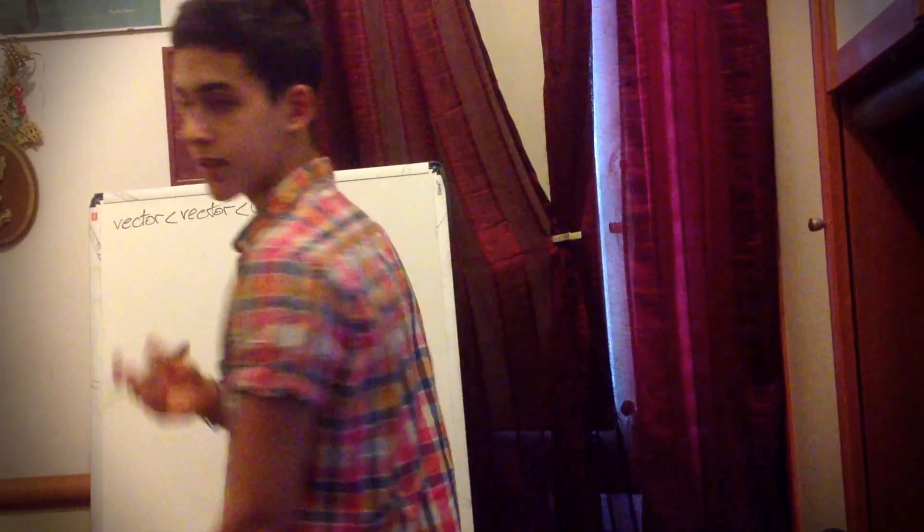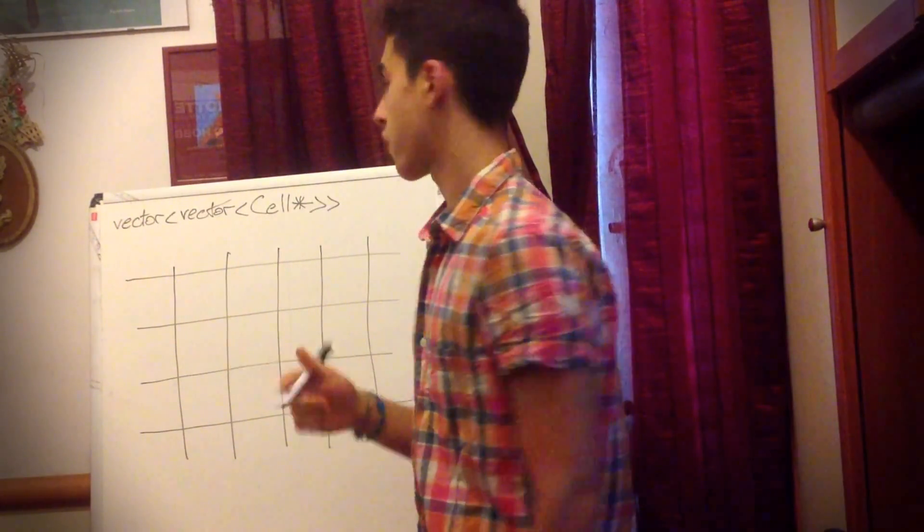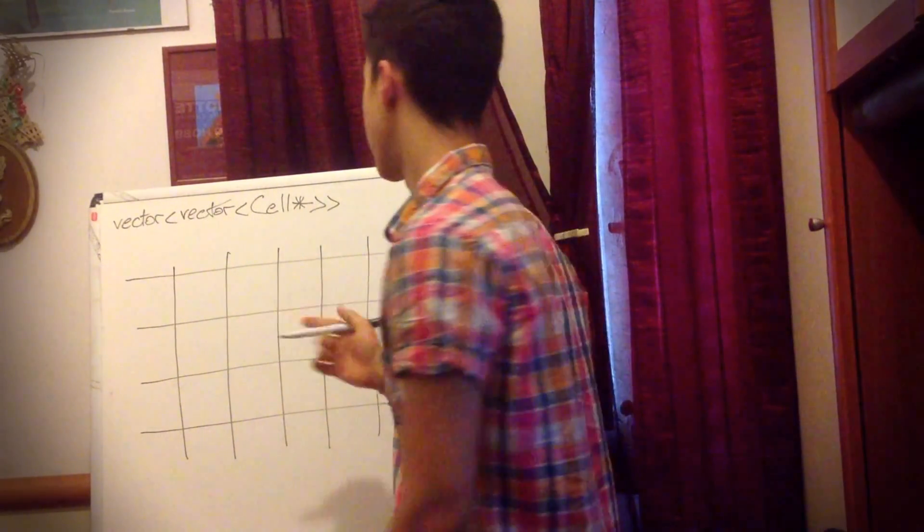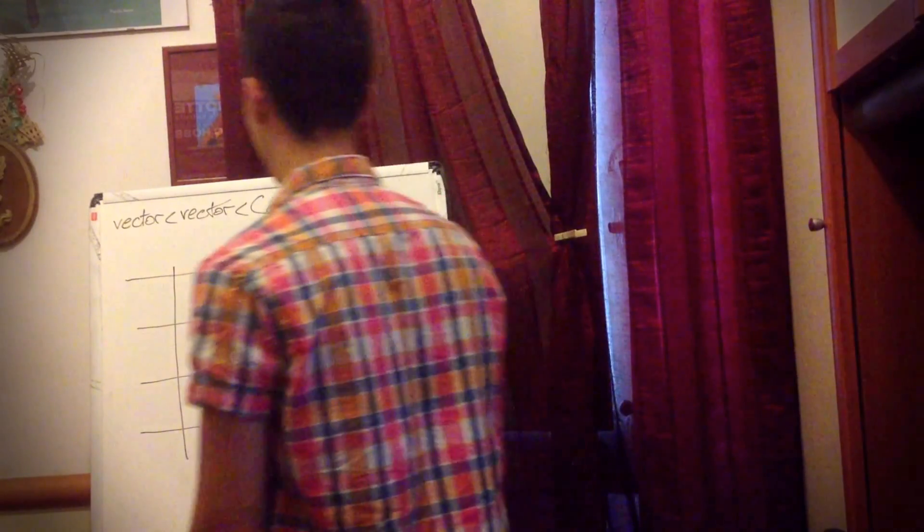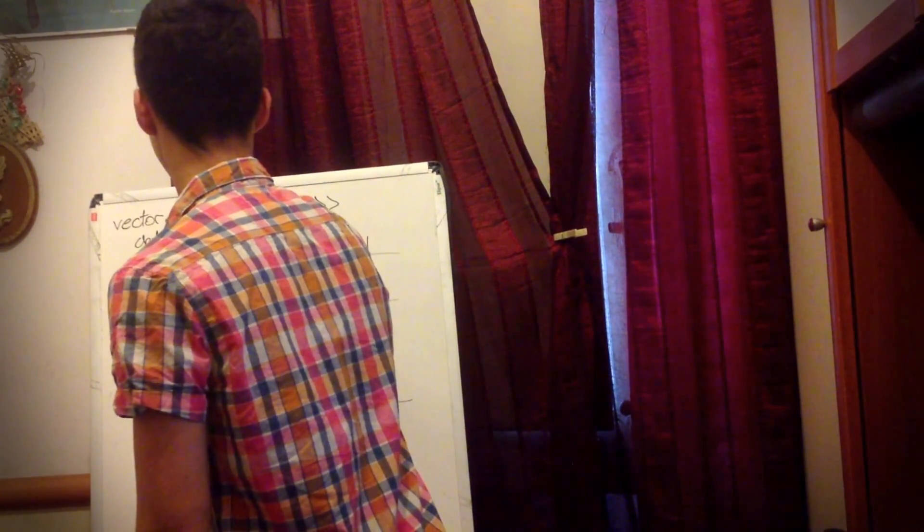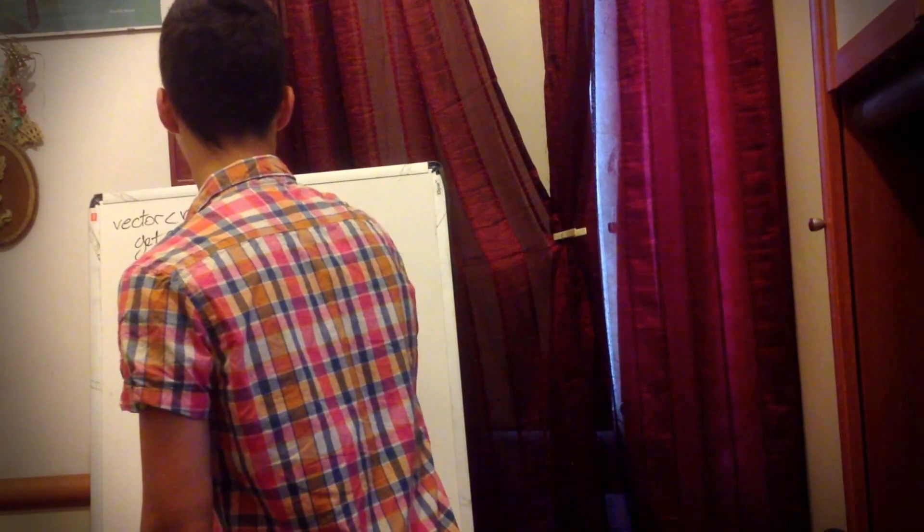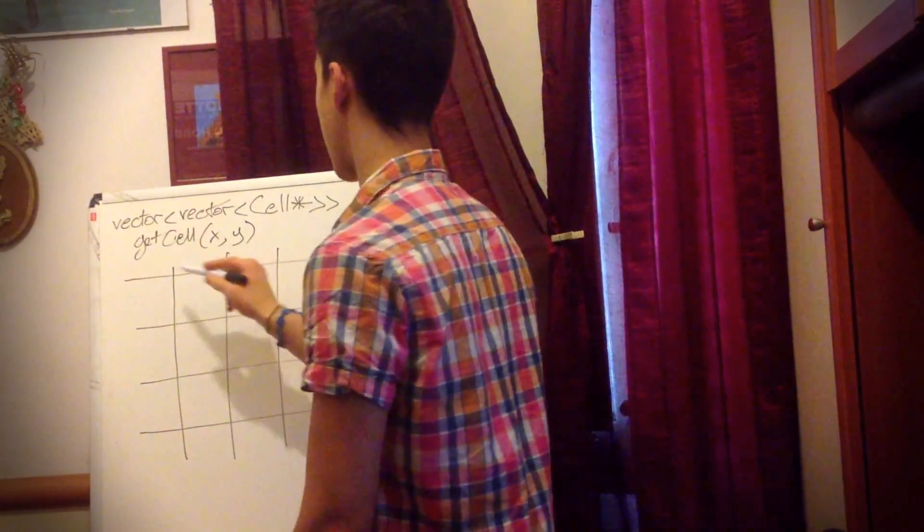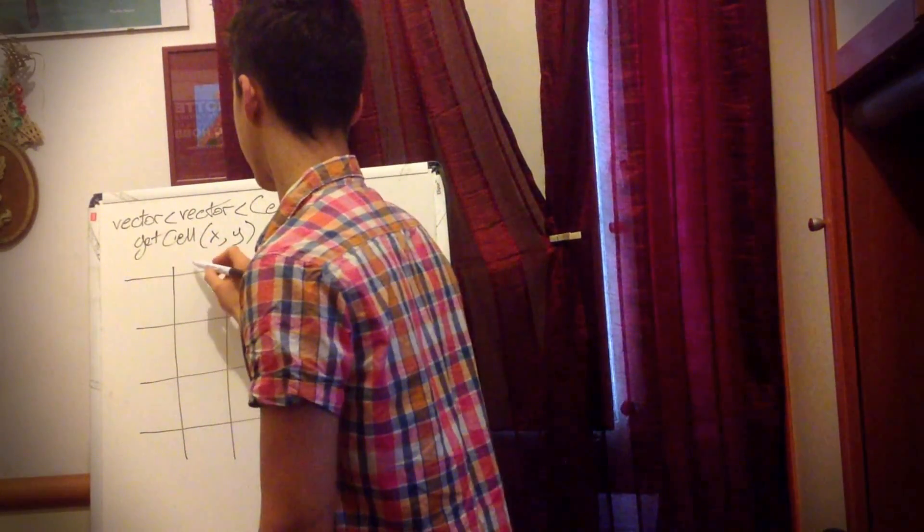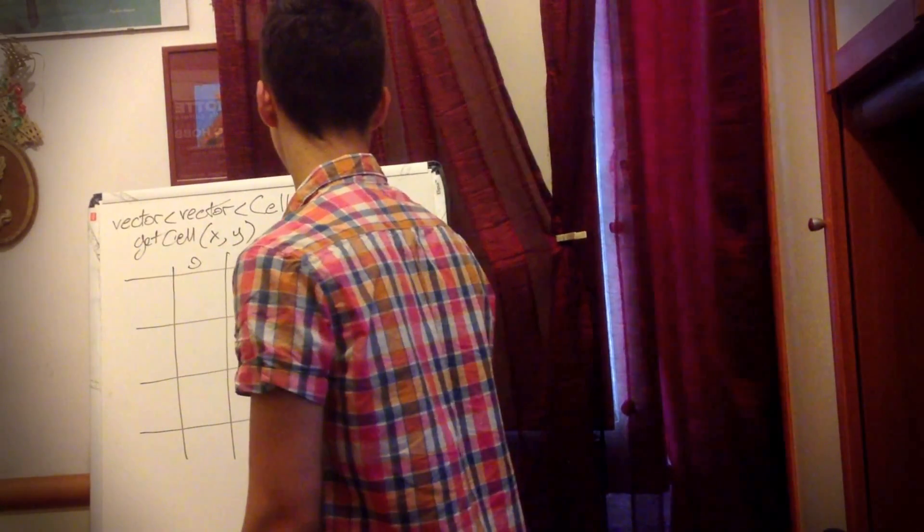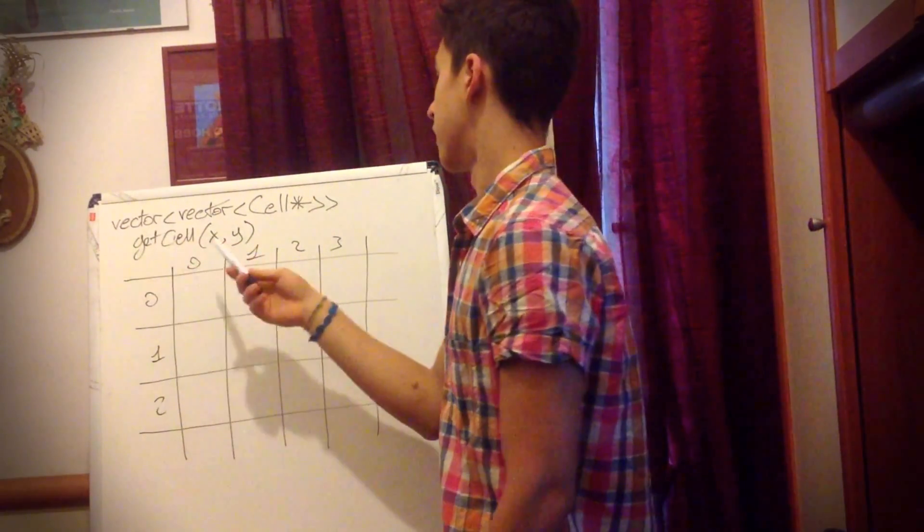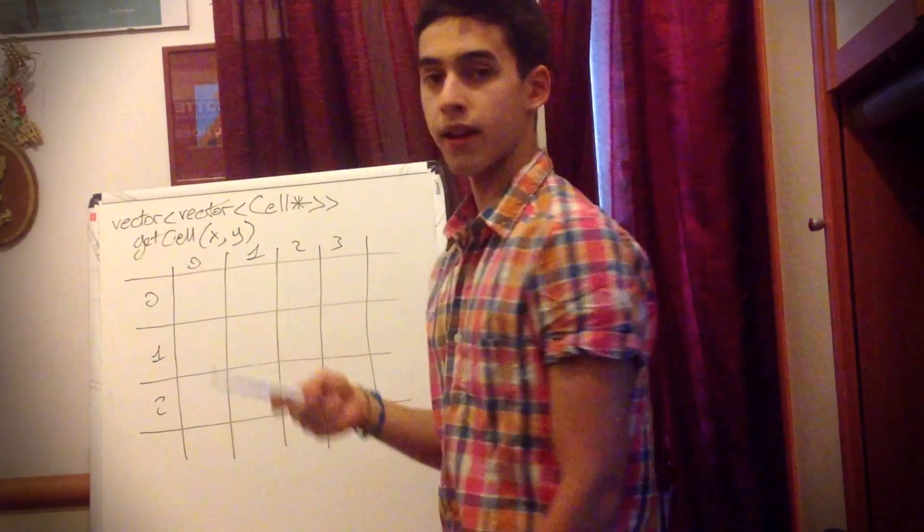So in this case we are going to make a simple example grid. What you want to do next is create a simple class, a grid class, where you can get cell pointers. So in this case we can have a simple get cell method. And by using coordinates you can get a pointer to the cell you desire. So in this case we have 0, 1, 2, 3. So if you call get cell for example 1, 1 you will get a pointer to this cell.